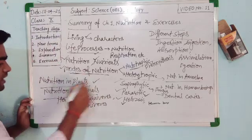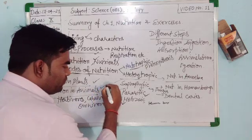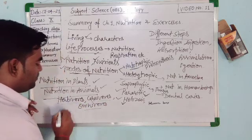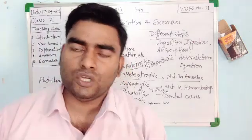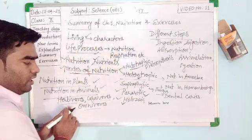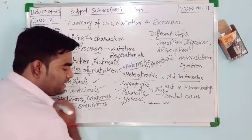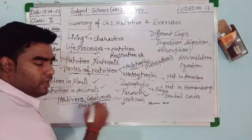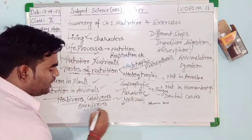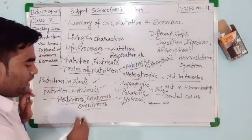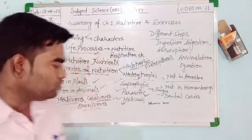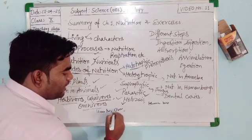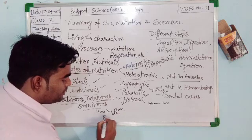On the basis of food habits, animals can be divided into three parts: herbivores, carnivores, and omnivores. Herbivores feed only on plants and herbs. Omnivores eat both plants and flesh — for example, human beings, crows, and bears.